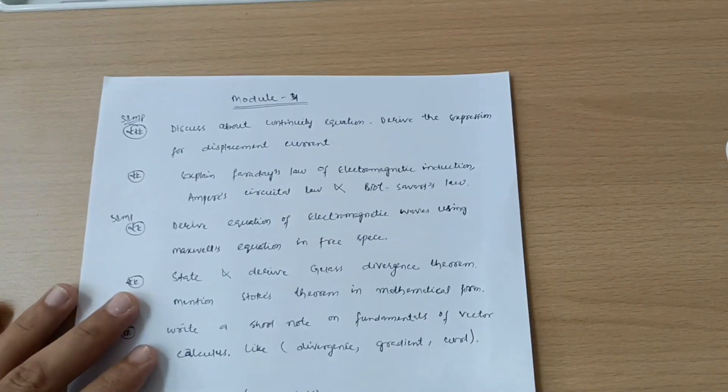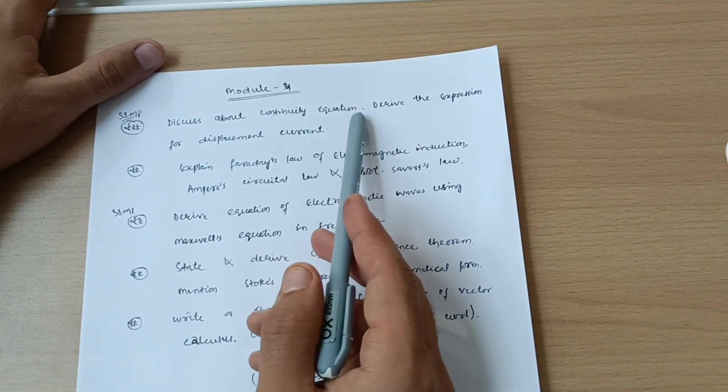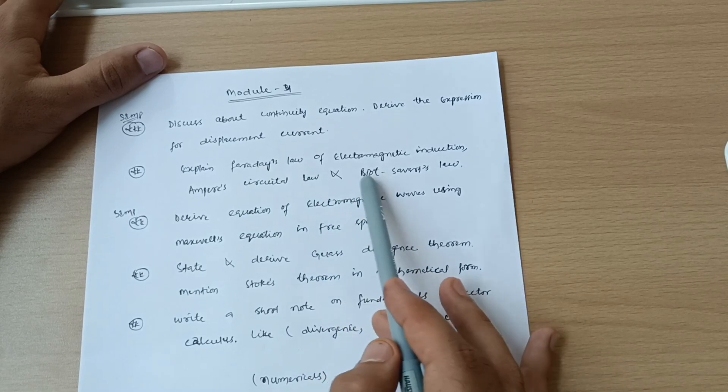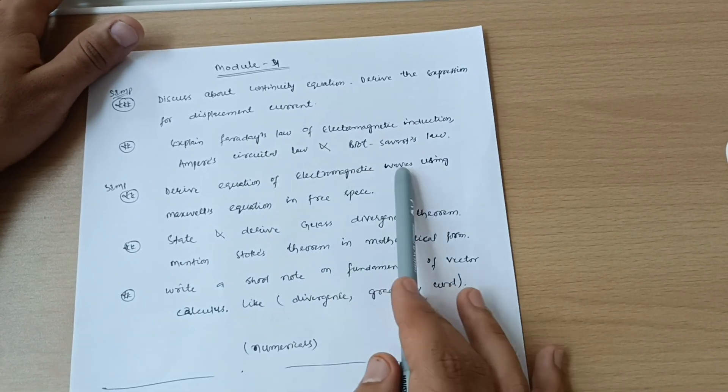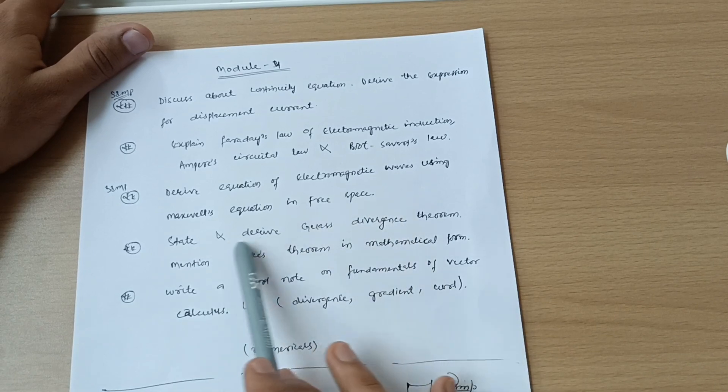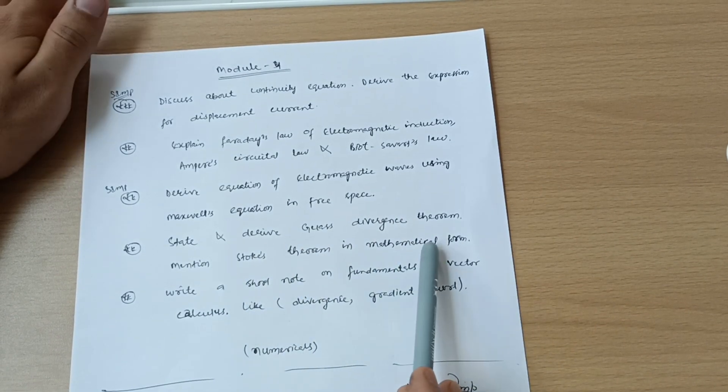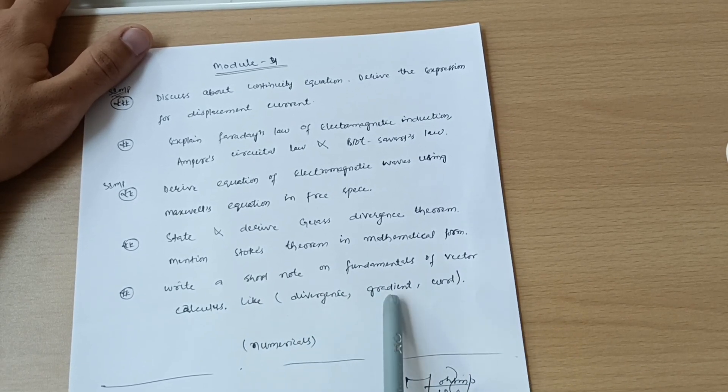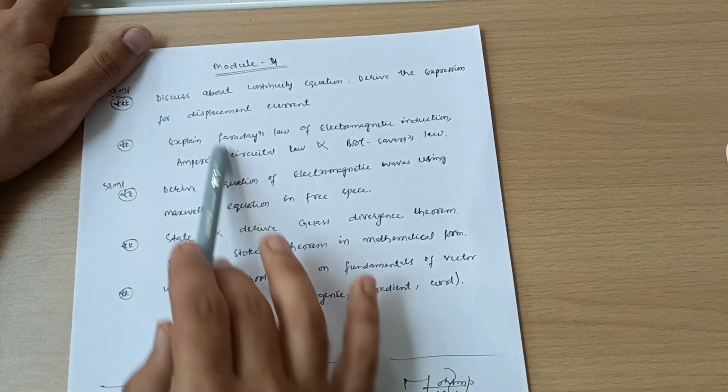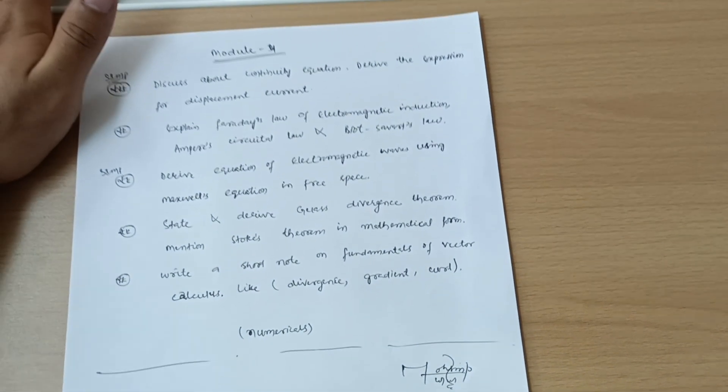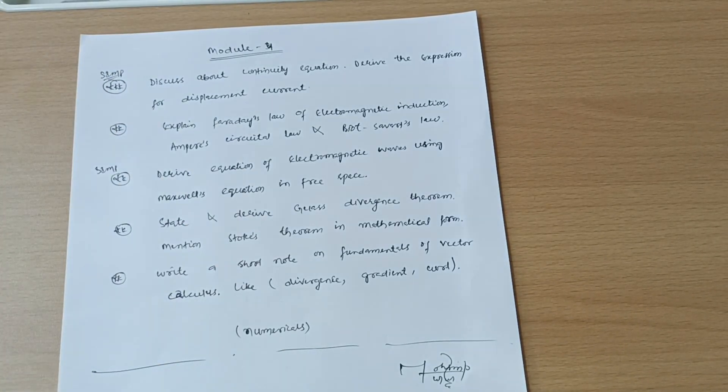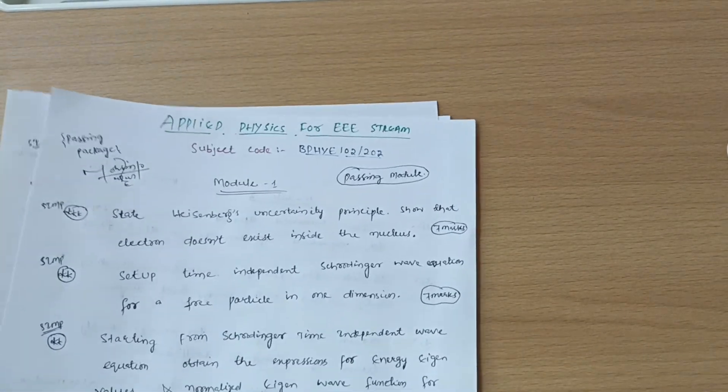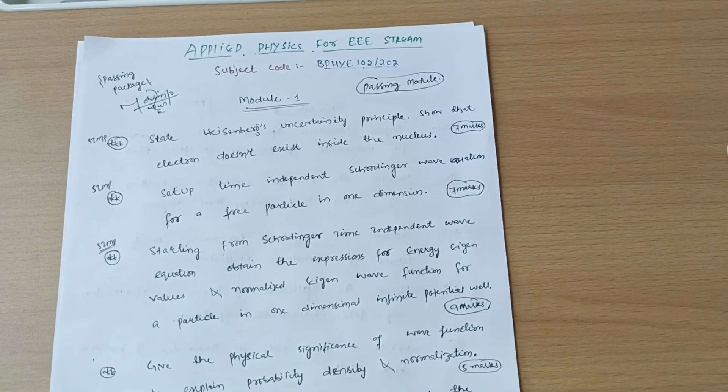This much is all about module second. Now let me come to module four in which you have to cover only five questions. Discuss about continuity equation, derive the expression for displacement current, and explain Faraday's law of electromagnetic induction, Ampere's circuit law and Gauss's law. Derive equation of electromagnetic waves using Maxwell's equations in free space. State and derive Gauss's divergence theorem and in dimension Stokes theorem in mathematical form. Write a short note on fundamentals of vector calculus, for example divergence, what does the divergence mean, what does the gradient mean, what does the curl mean. And if you are convenient to go through the numerical part, this much is the theoretical concepts which I discussed in this particular video. You can easily pass if you just read this much theory.